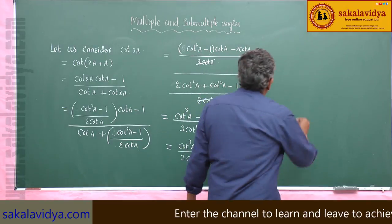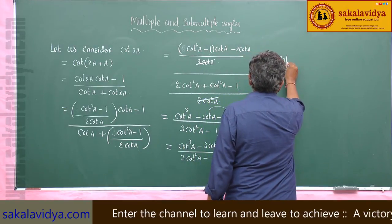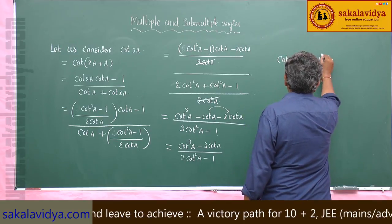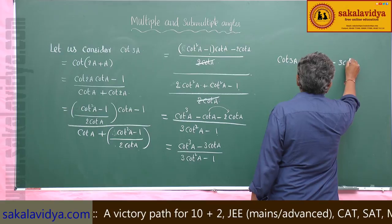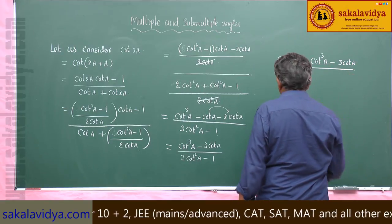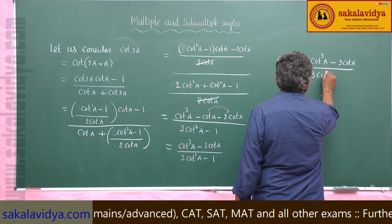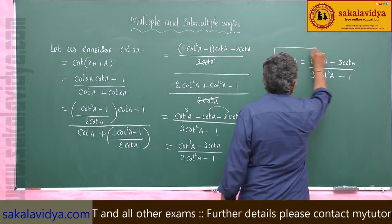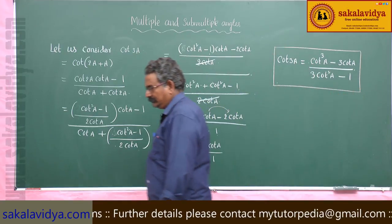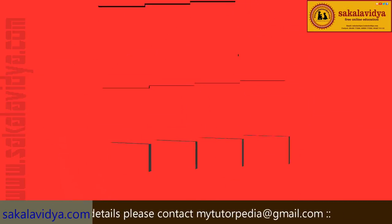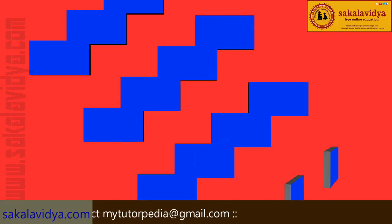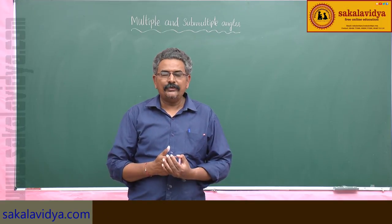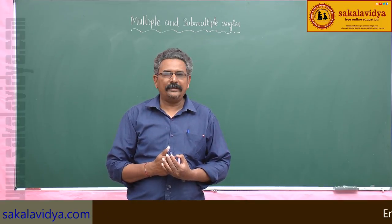So, cot(3a) = (cot³a - 3cot(a)) / (3cot²a - 1). This is our formula for cot(3a). Now let us find out the value of sin(18°) using multiple and sub-multiple angles.